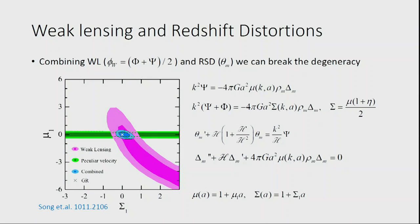Combining two different ways to look at structure formation is very important. Weak lensing measures (phi + psi)/2, peculiar velocities and redshift-space distortions measure the peculiar velocity of matter, which is determined by psi. Psi is determined by the function mu and density. In the evolution equation for density, mu appears, meaning peculiar velocity — which determines RSD — only cares about mu. If you just use RSD, this is a constraint on mu only; there's no constraint on sigma.